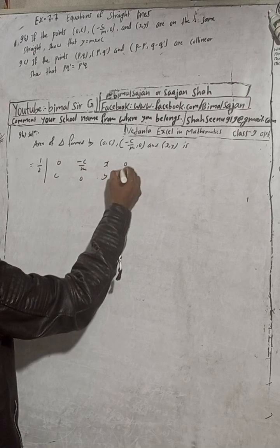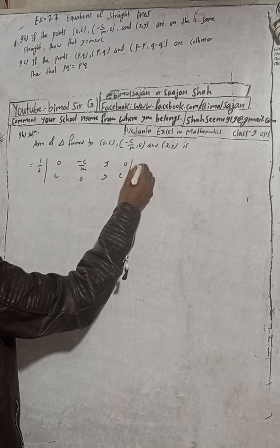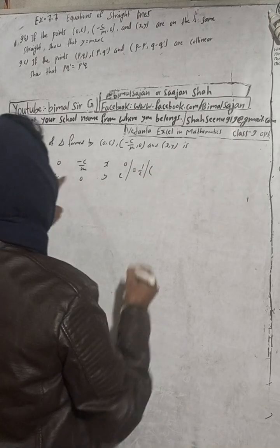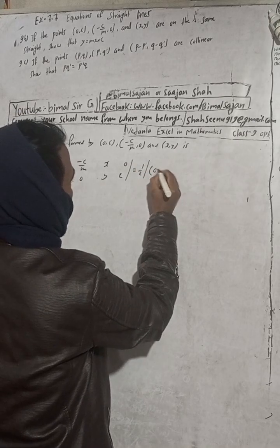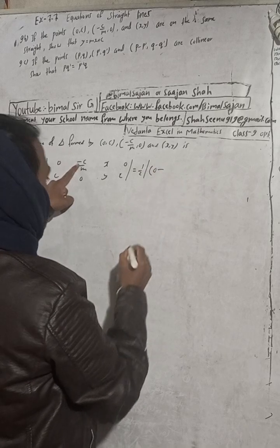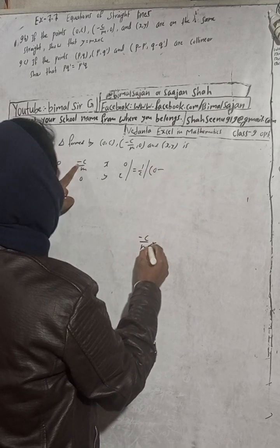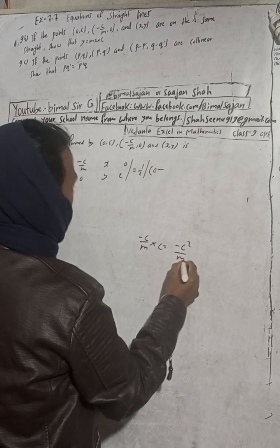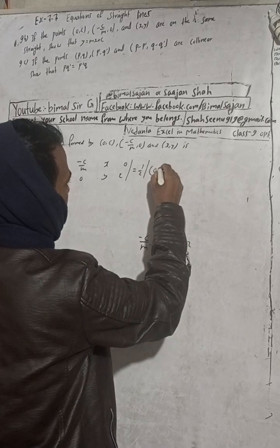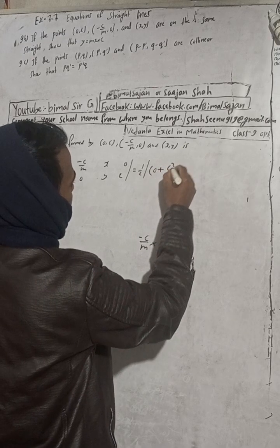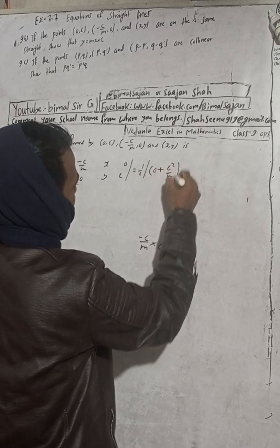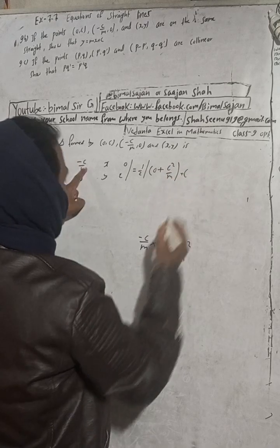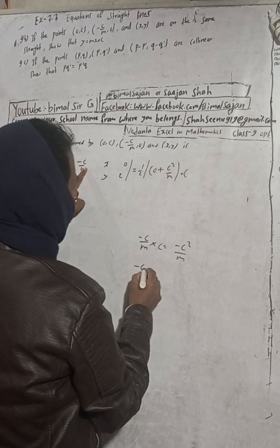So we get one-half times [0 times 0 minus 0, then minus C/m times C equals -C²/m, but there is already minus so this becomes plus C²/m, now plus this times x].